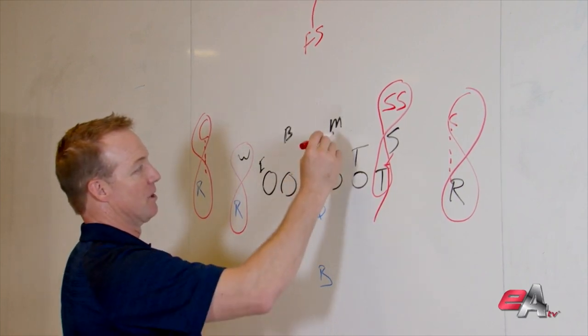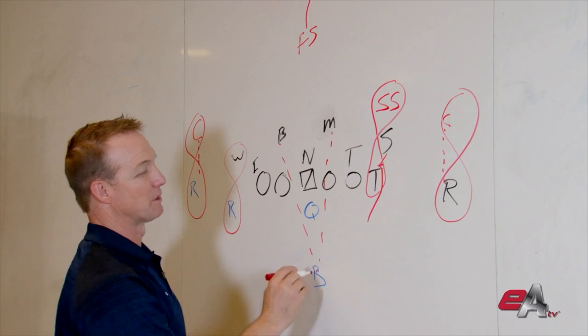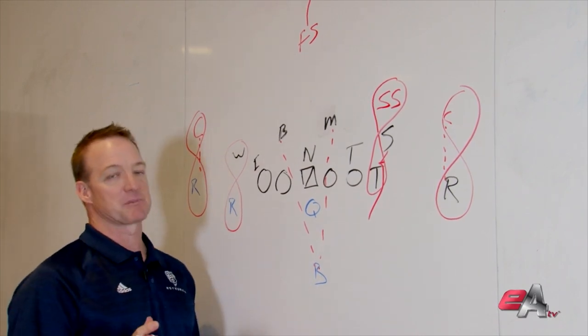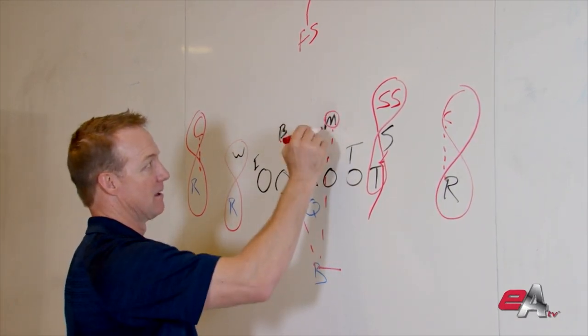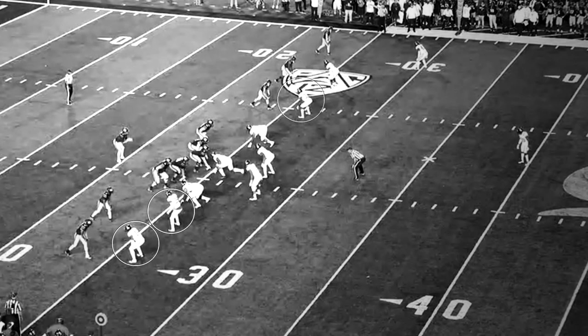Your backers, one of them will be man to man with the running back out of the backfield. Some teams play this that it's a call if the back comes right. Strong side backer, strong side here, gets him. If the back comes left, the opposite backer gets him. That's one of the calls defenses can make.